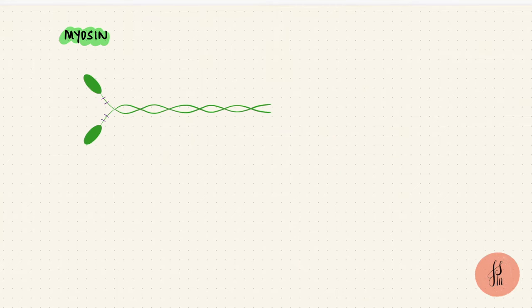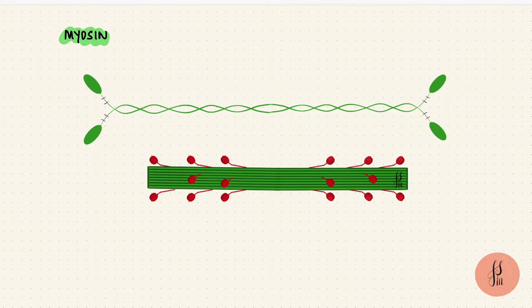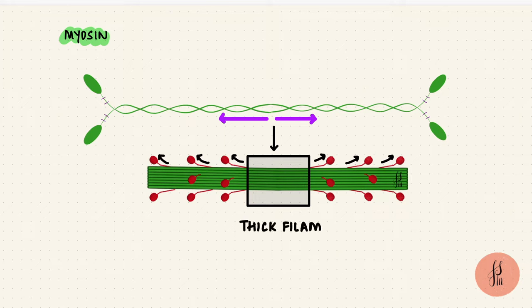The molecules are arranged in anti-parallel directions such that they attach at the M line in the center. So there are no myosin heads towards the central portion of the thick filament. The tails of the myosin molecules are towards the center of the filament and the heads extend outwards at angles in all directions. So multiple myosin molecules form a thick filament.